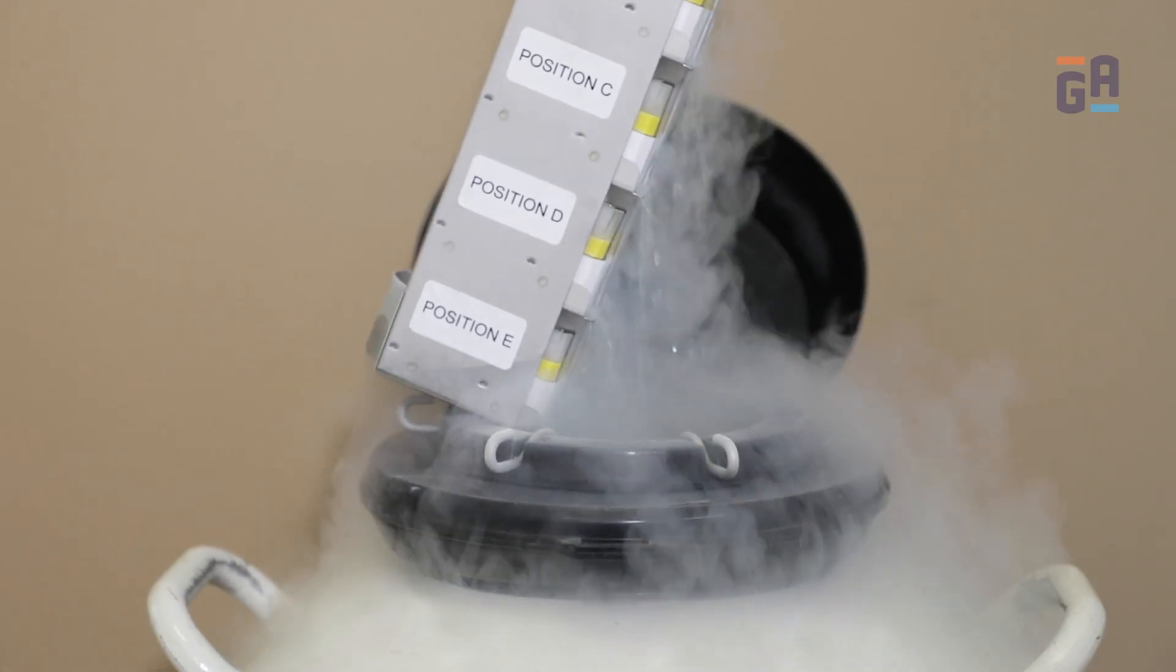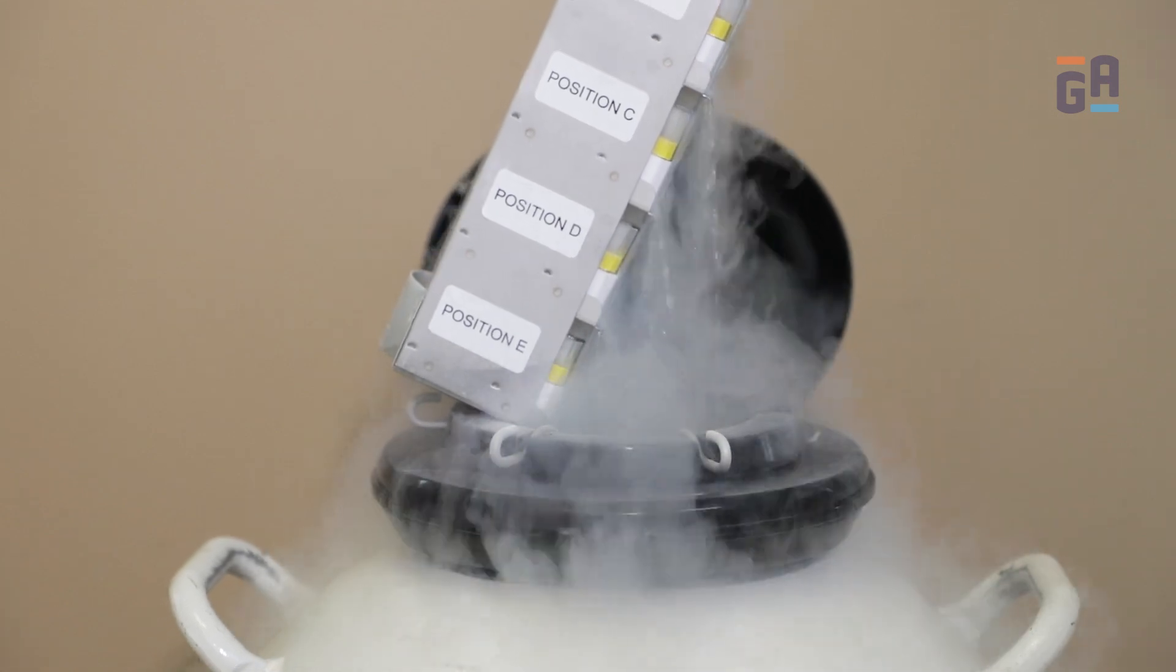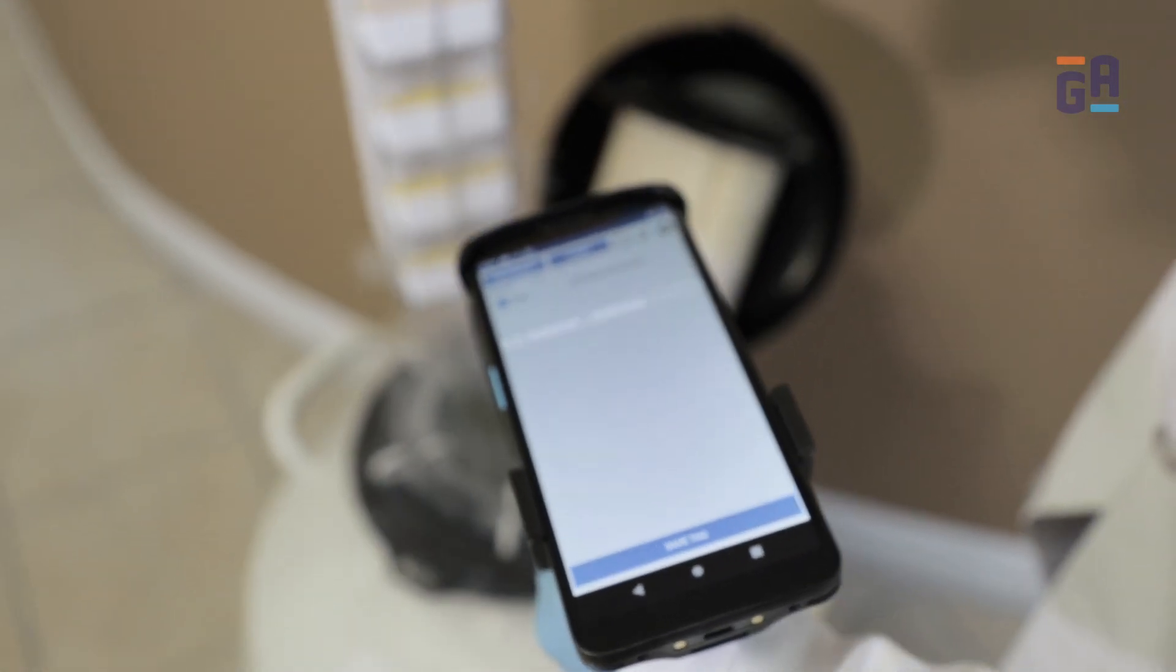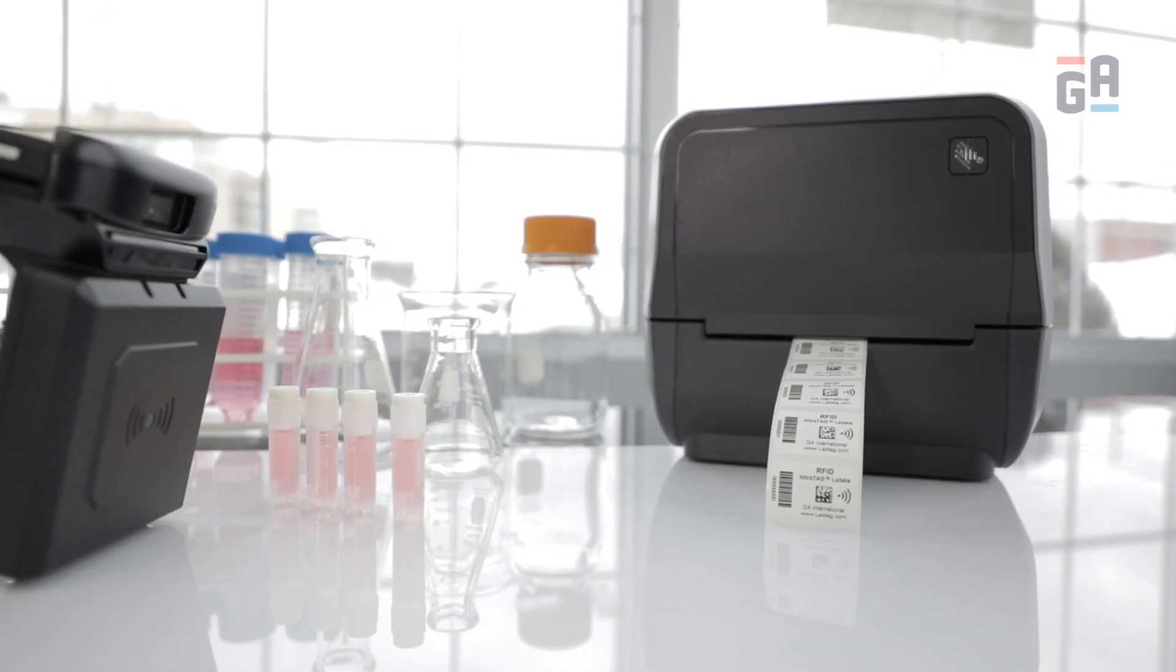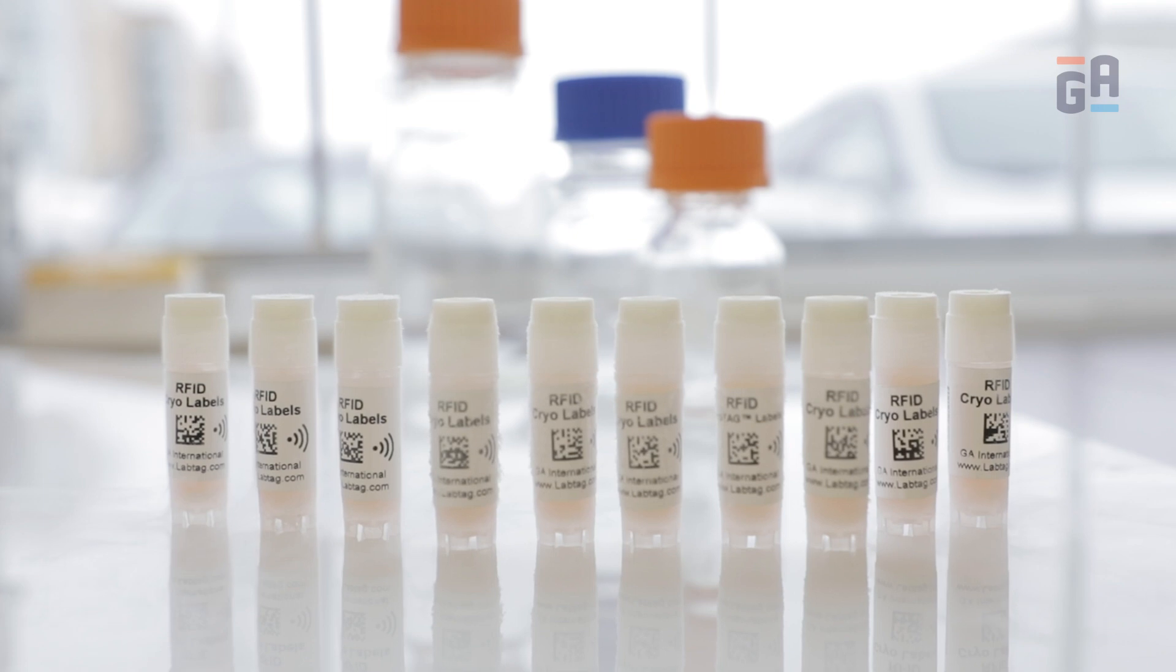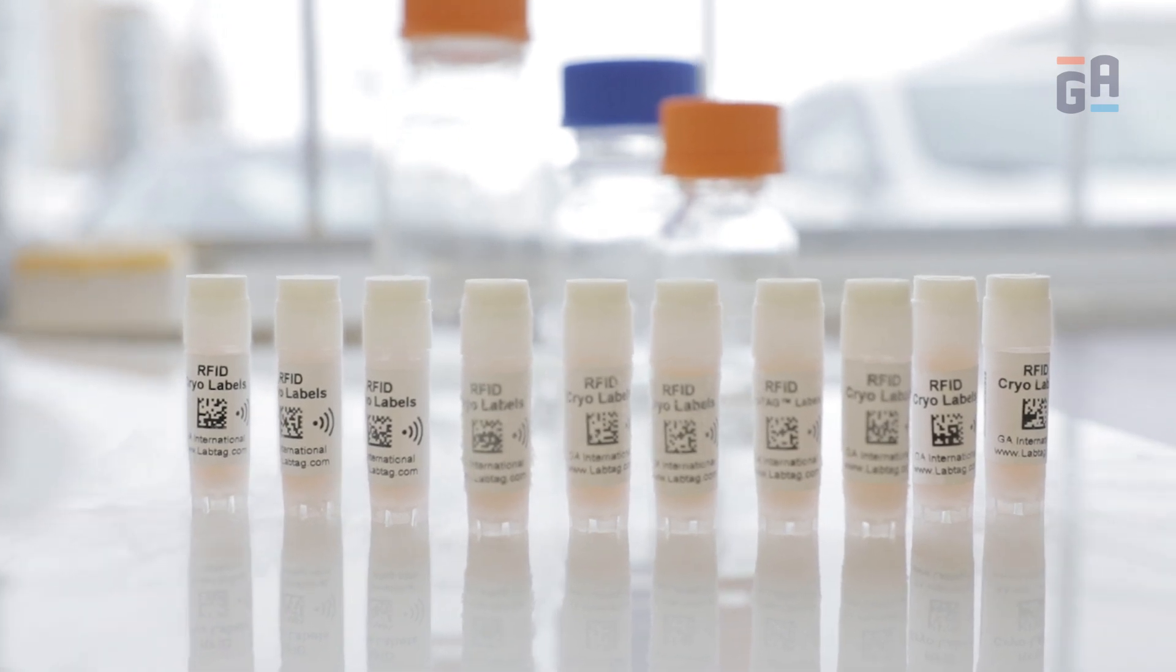The appeal of RFID labels is their ability to be scanned without a direct line of sight with a wide omnidirectional read range. This allows multiple labels or tags to be read simultaneously, saving a tremendous amount of time.